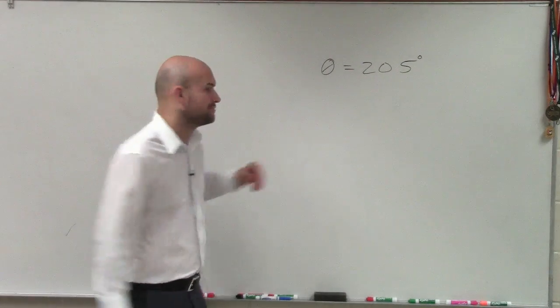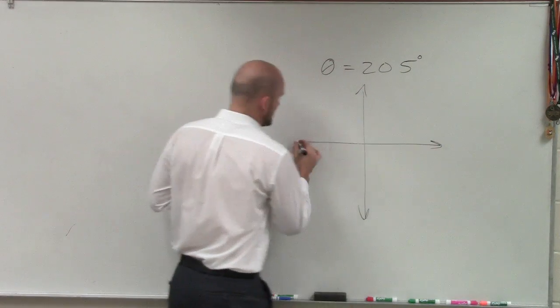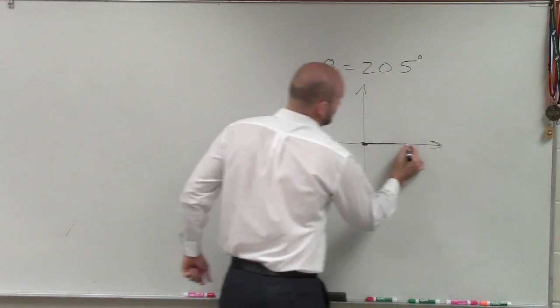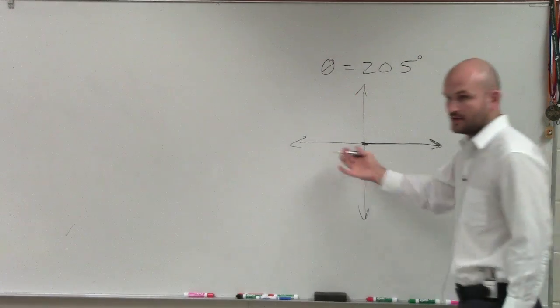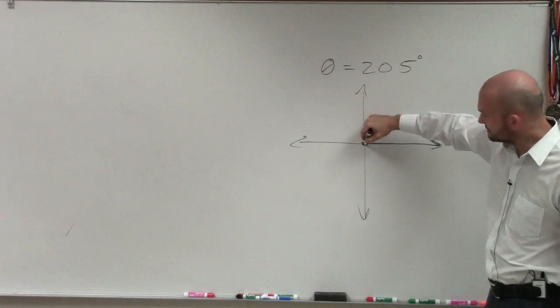So first thing we need to do is learn how to sketch 205 degrees. So we remember that we are sketching this in standard position, where that's going to be our initial side. Our initial side is always going to start here. And then we're going to rotate a ray about the same vertex at the origin.